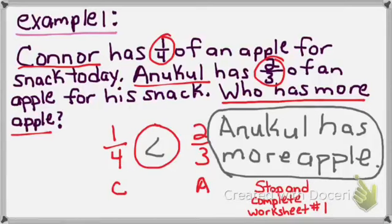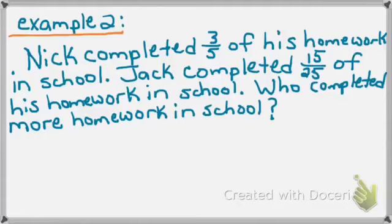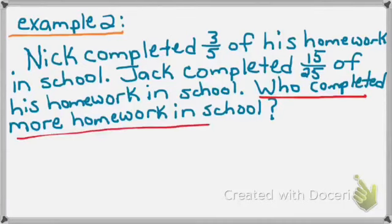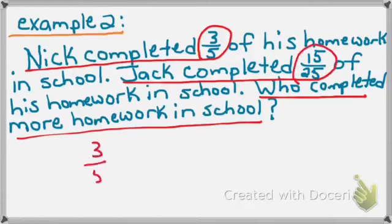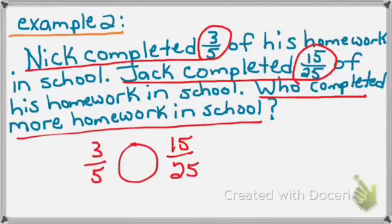Let's check out example two. Nick completed three-fifths of his homework in school. Jack completed 15-25ths of his homework in school. Who completed more homework? The question is asking me: who completed more homework? I know that Nick completed three-fifths of his homework, and Jack completed 15-25ths. So I am going to compare three-fifths to 15-25ths. Three-fifths is Nick — I'll put an N. 15-25ths is what Jack completed — I will put a J. Let's solve this problem.